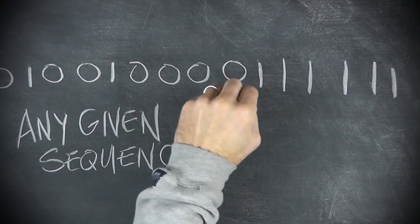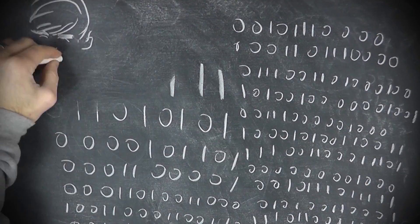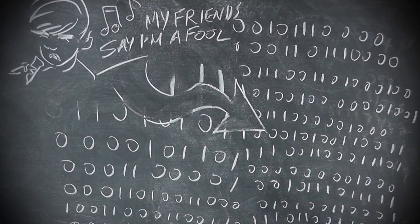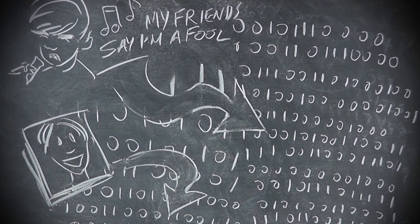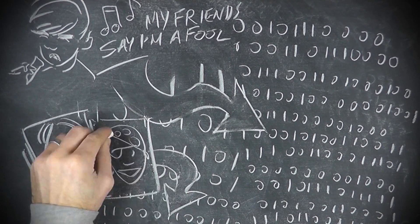Computer files are just binary strings, so we could find your favorite MP3 somewhere in Pi. We could find a picture of you in there, or a picture of what you'll look like in ten years.